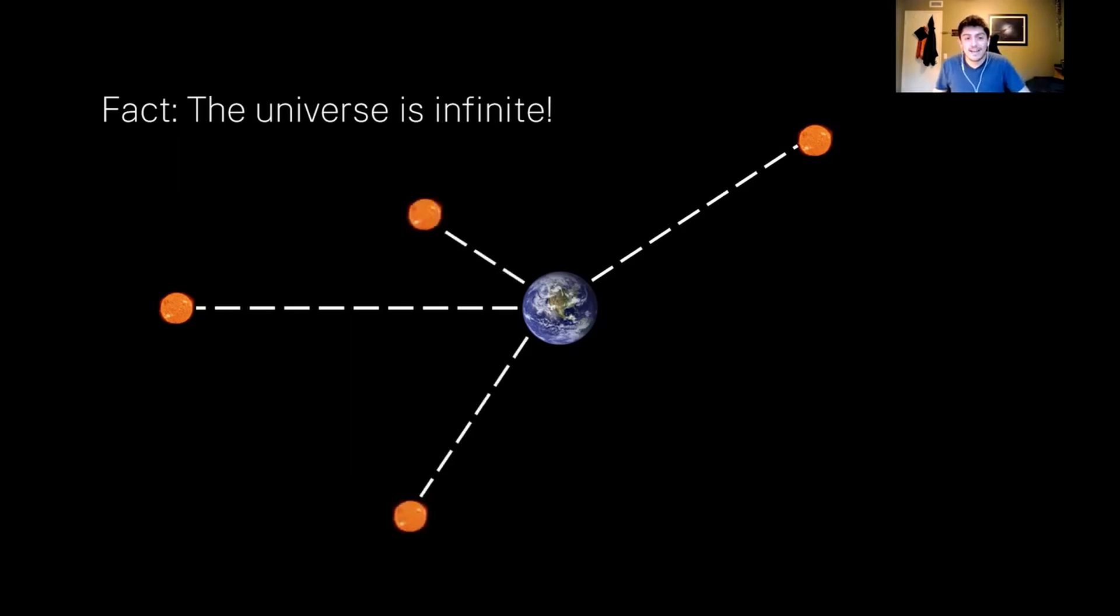And you can do that again, and again, and again. And so with every direction and any direction that we choose in the night sky, if you go far enough, you will run into a star as a consequence of the fact that the universe is infinite.